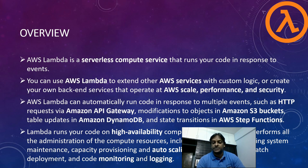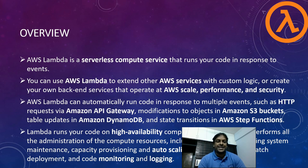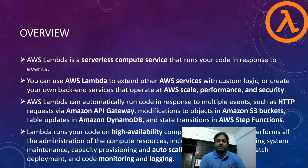Lambda runs your code on high-availability compute infrastructure and performs all the administration of compute services, including server and operating system maintenance, capacity provisioning, auto scaling, security patch deployment, and code monitoring and logging. This is the high-level overview of Lambda function. Lambda function and serverless are both together — whenever we talk about serverless, we can think about AWS Lambda.